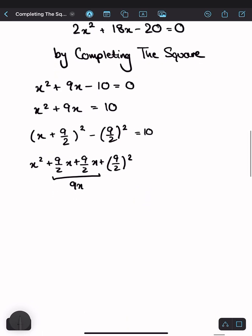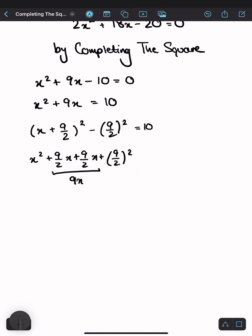Now, let's rearrange the equation to get 9 over 2 squared onto the right side by adding it. x plus 9 over 2 squared equals 10 plus. And now square the numerator and denominator. You get 81 over 4.